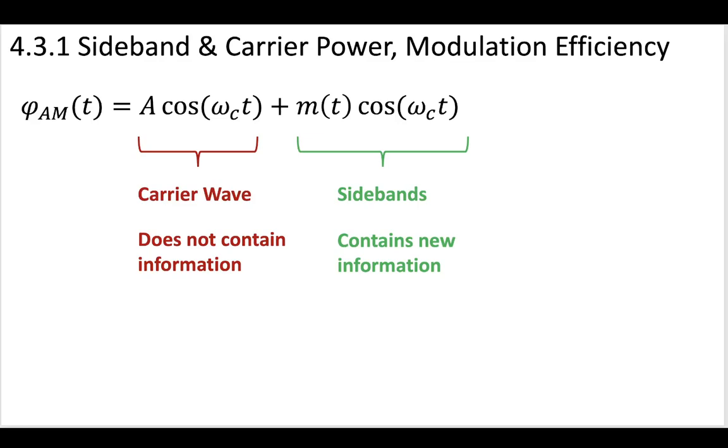So the sidebands, those are the ones that contain the new information, and that's because it's modulated with our message. It contains the information. The other part, that carrier wave, does not contain the new information. That's just there so that we can move our envelope up, so that we have an envelope that has the full set of information as the actual message.